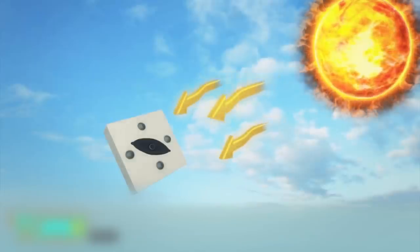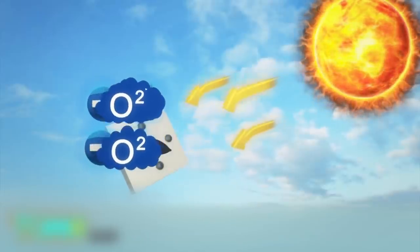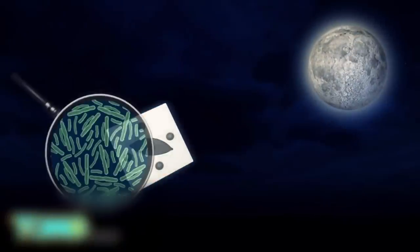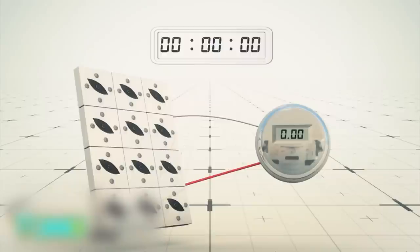In the daytime, oxygen and electrons are released through photosynthetic reactions. At night, electrons are produced from the bacteria's respiratory activities. 5.59 microwatts were generated in 12-hour day-to-night cycles over a total of 60 hours.